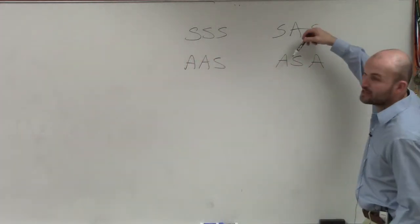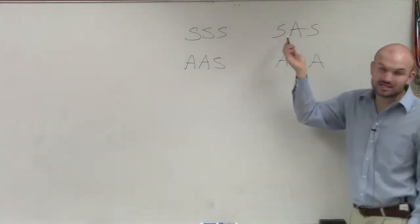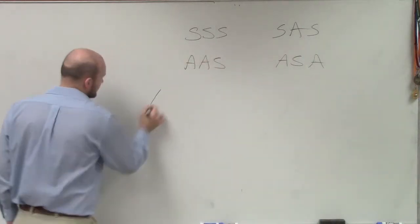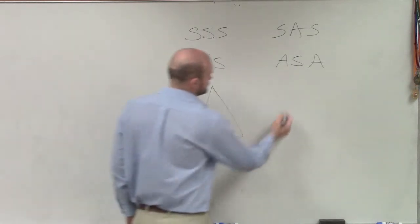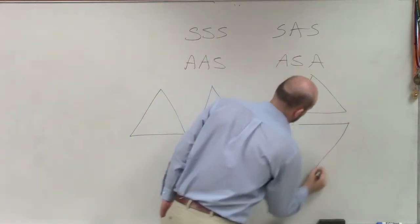Now remember, when we're talking about angle, side, angle, that side has to be included, just like our angle had to be included over here. So let's go and take a look at what an example would look like of these two different types of congruencies, OK?